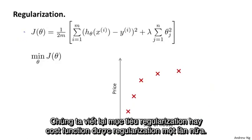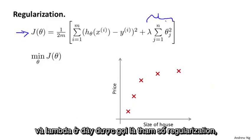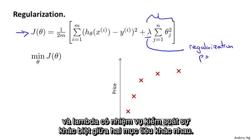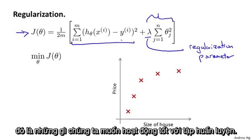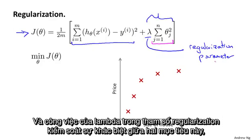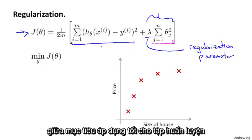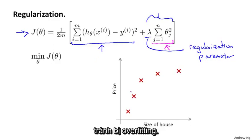Writing down our regularized optimization objective, our regularized cost function again, here it is. Here's J of theta, where this term on the right is the regularization term. And lambda here is called the regularization parameter. And what lambda does is it controls a trade-off between two different goals. The first goal captured by the first term in the objective is that we would like to fit the training data well. We would like to fit the training set well. And the second goal is we want to keep the parameters small. And that's captured by the second term, by the regularization objective. And what lambda, the regularization parameter does, is it controls the trade-off between these two goals. Between the goal of fitting the training set well and the goal of keeping the parameters small and therefore keeping the hypothesis relatively simple to avoid overfitting.